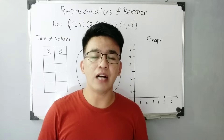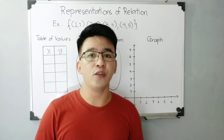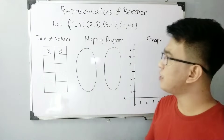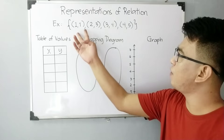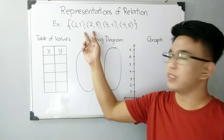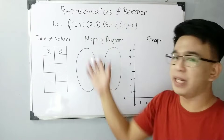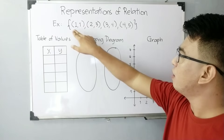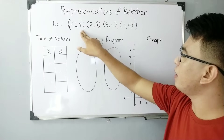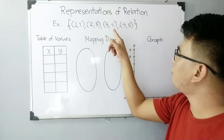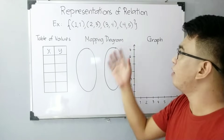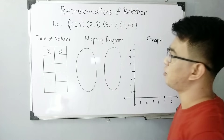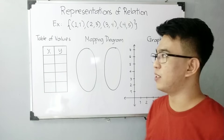In this part of the video, I will give you the different ways on how to represent a relation. The first one is by ordered pairs. This is the first way I already showed you with the definition of relation. We have here: 1,1; 2,3; 3,4; and 4,5. This is the first way on how to represent a relation using ordered pairs.